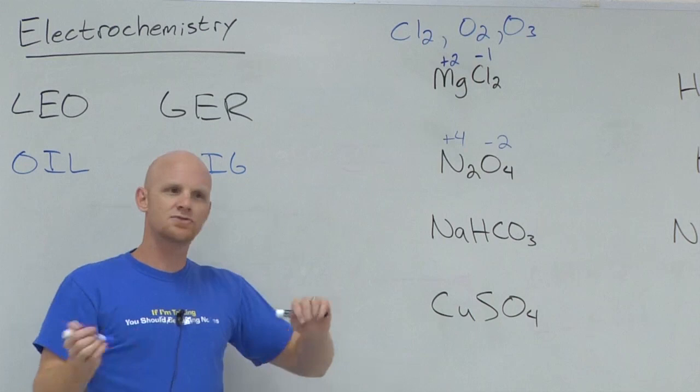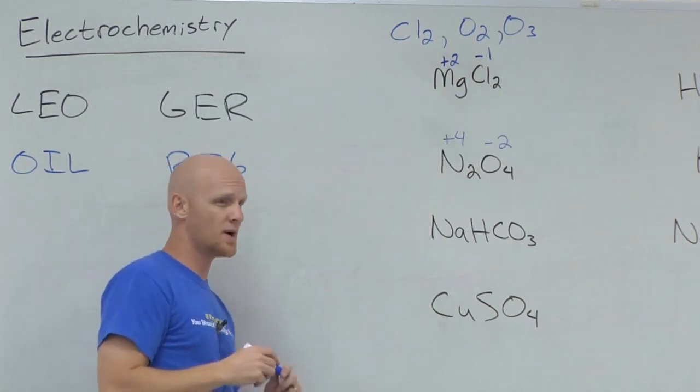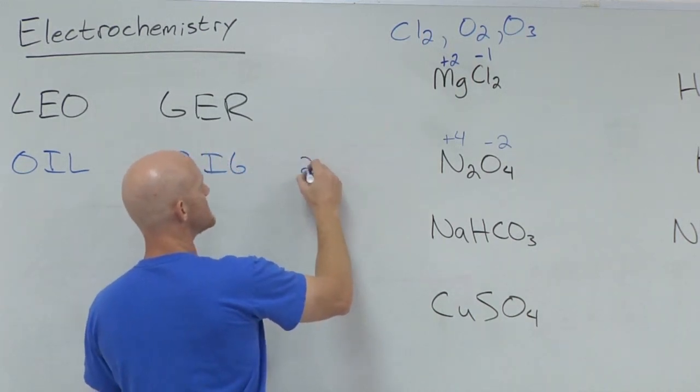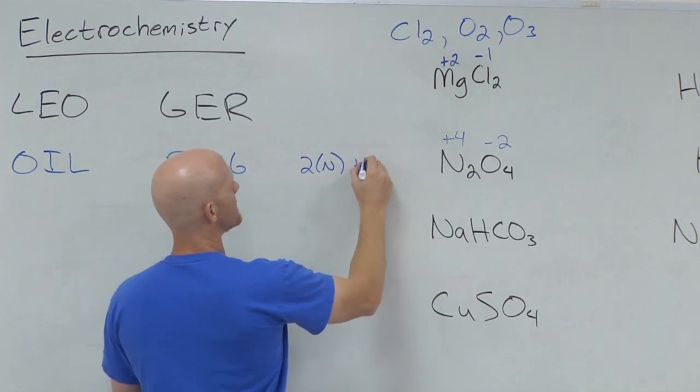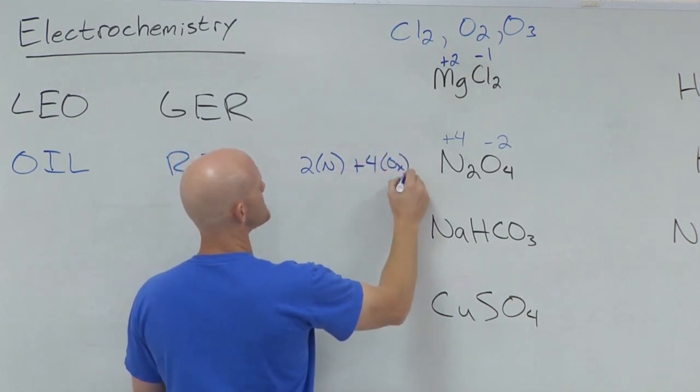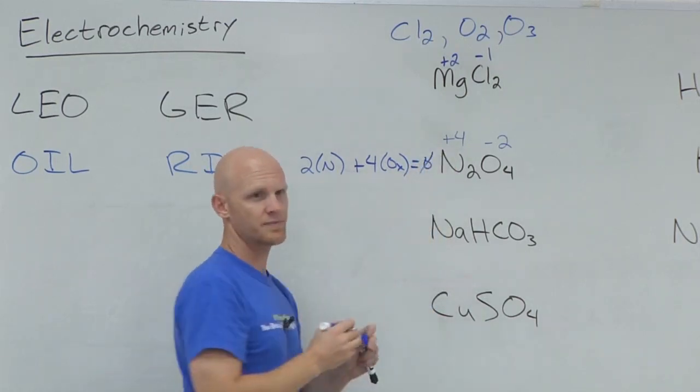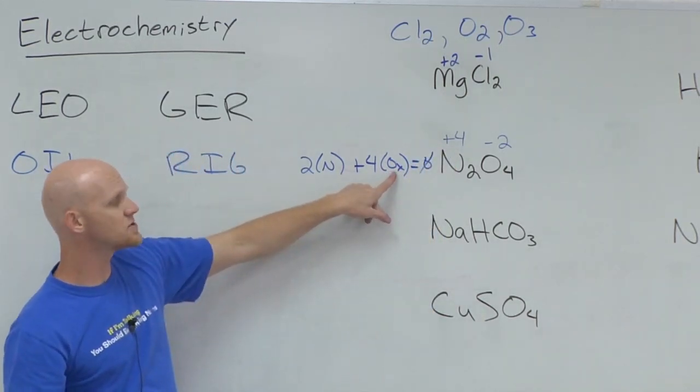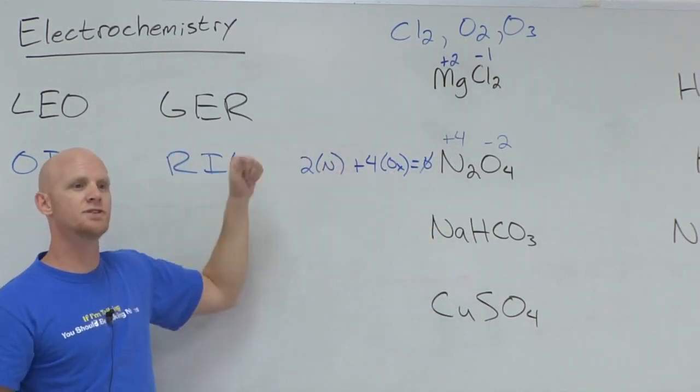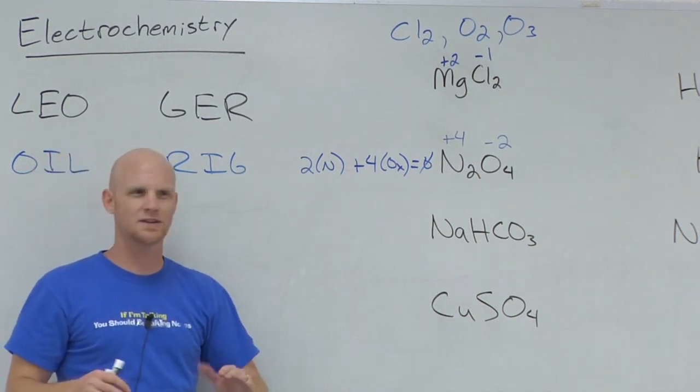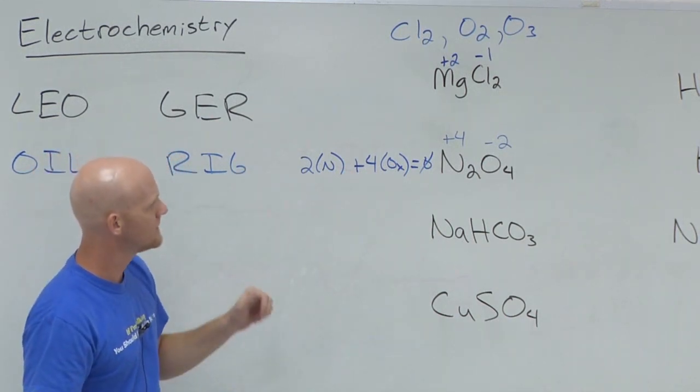So if you struggle with getting these, you can make an algebra equation out of this too, right? You can say two times whatever nitrogen is, plus four times whatever oxygen is, balances it out, in this case, to an overall charge of zero. And so if you just substitute in the negative two for oxygen, then you could solve for what nitrogen would have to be. So you can make an algebra equation out of it if you struggle with this.